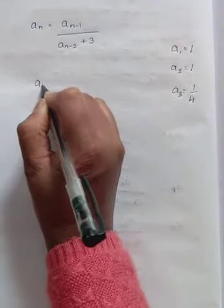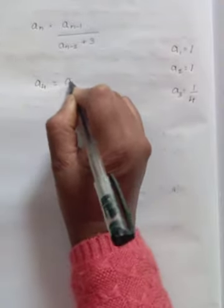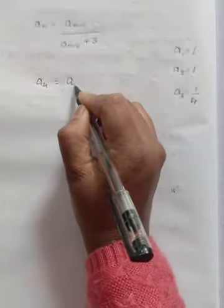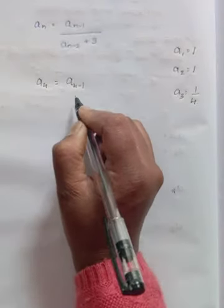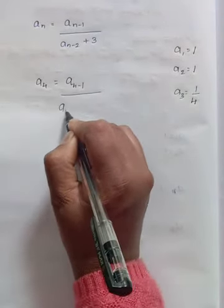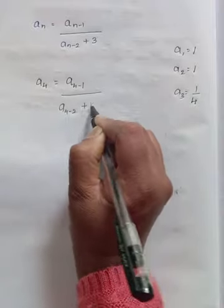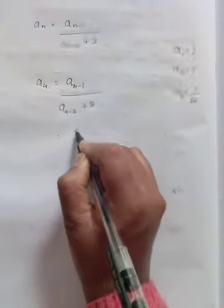Now let us write A4. We will find the fourth term. In the place of n, let us write 4. So A4 minus 1 divided by A4 minus 2 plus 3.